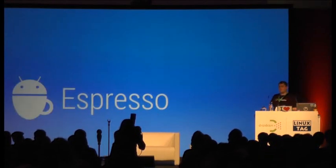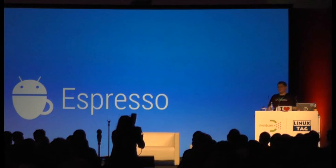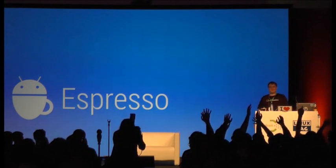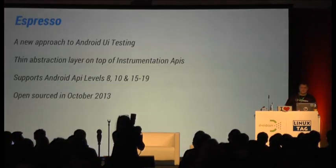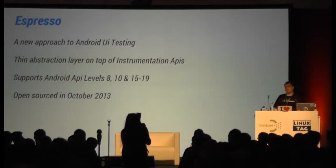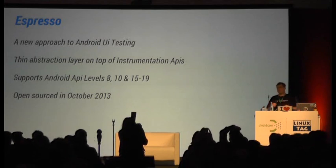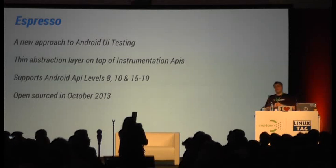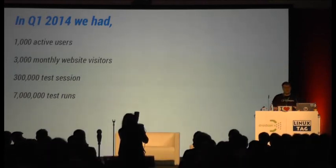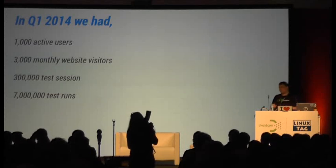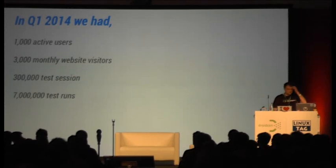Espresso. How many people know what Espresso is? Wow, that's a lot — I'm really impressed. How many people actually use it in their day-to-day development? Okay, that's great. Espresso is a new approach to UI testing on Android — it's a thin abstraction layer on top of the instrumentation APIs. We launched it as a preview publicly in October on code.google.com, and since then we've seen tremendous growth: 1,000 active users, 3,000 GitHub watchers, and — more importantly — 300 test suites and almost 7 million test runs. That's pretty good.